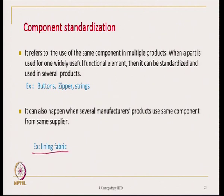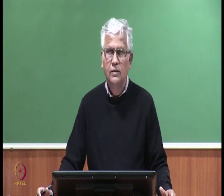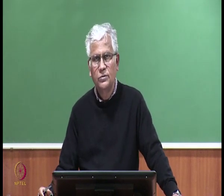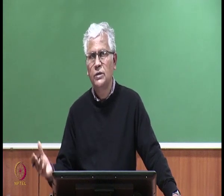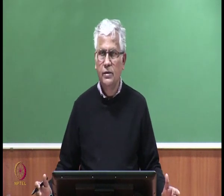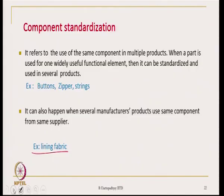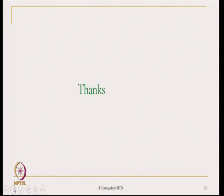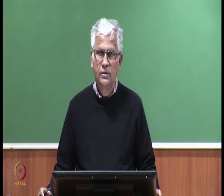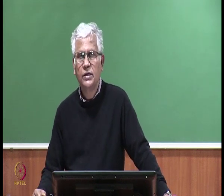One example is lining fabric, which is used in coats, blazers, and blouses. Since everybody is going to use lining fabric, we can have a standardized specification for lining fabric which can be used by many manufacturers. With this, we close this particular session. This is all about the architecture of textile products — there are a few architecture types we have discussed, and generally these are the types which are used.